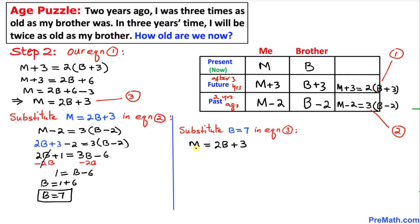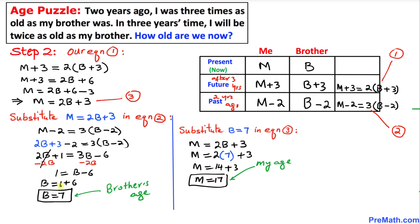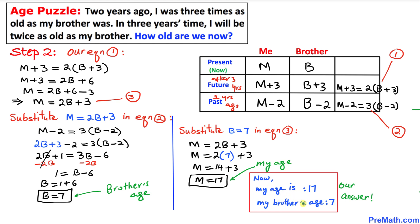Now we substitute b equals seven into equation number three: m equals two times seven plus three, which gives m equals seventeen. So b stands for my brother's age, which is seven, and m stands for my own age, which is seventeen. My present age turns out to be seventeen and my brother's age is seven. That's our final answer. Thanks for watching — please don't forget to subscribe to my channel for more exciting videos!